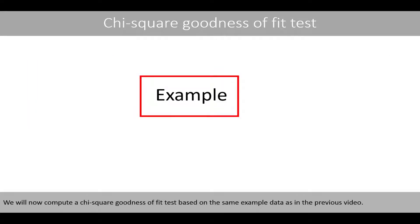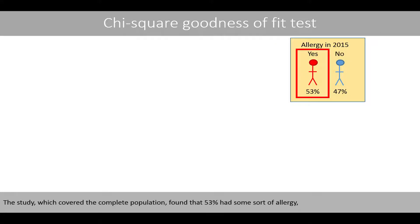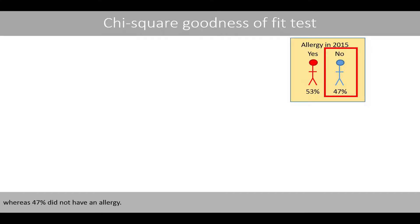We'll now compute the chi-square goodness of fit test based on the same example data as in the previous video. In an extensive study from 2015, a group of investigators analyzed how common allergies were in a certain population. The study, which covered the complete population, found that 53% had some sort of allergy, whereas 47% did not have an allergy.